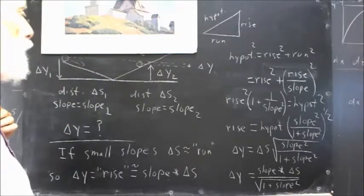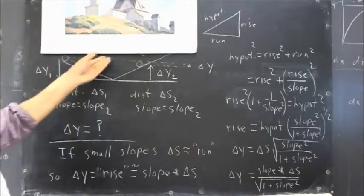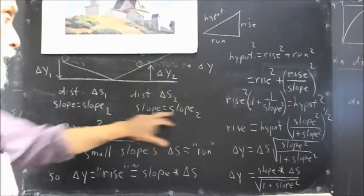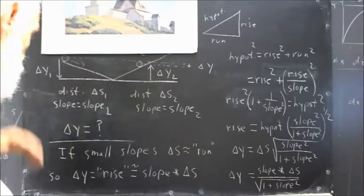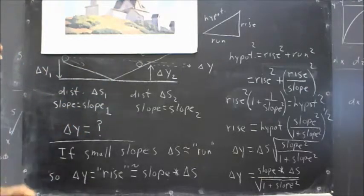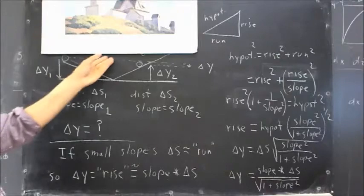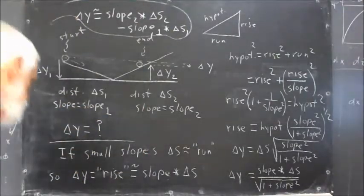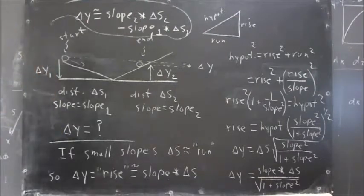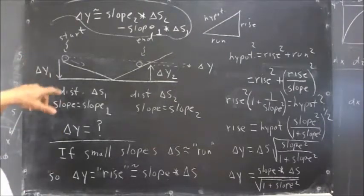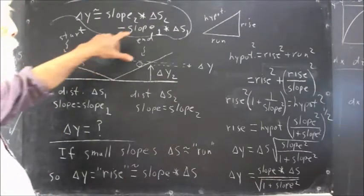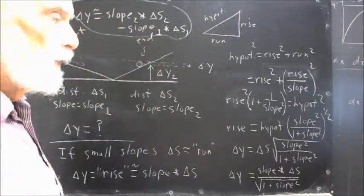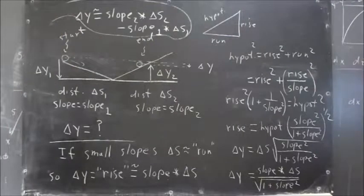So if we take the slope as positive, that is, these slopes aren't signed. The rise and the run aren't vectors. They're just scalars. What we're going to have is the delta Y1 is going to be negative. So we're going to have negative slope 1 times delta S1. Delta Y2 is positive. We're going to have slope 2 times delta S2.